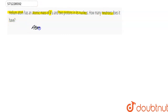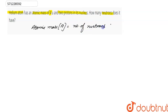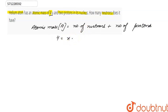First of all, atomic mass, which is denoted by capital letter A, is equals to number of neutrons plus number of protons in the nucleus. Atomic mass is given as 4, number of neutrons we have to find out, plus number of protons, which are 2.